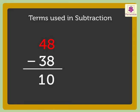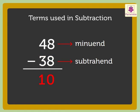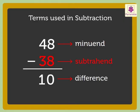The number from which a number is subtracted is called minuend. The number that is subtracted is called subtrahend. The answer we get after the subtraction operation is called difference. In the example just solved, 48 is the minuend, 38 is the subtrahend, and 10 is the difference.